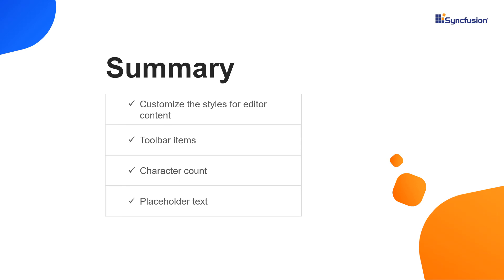That's it. You can download this working example from the GitHub link in the video description below. You can also check if you're eligible for our community license, which gives you a free license key to use our Blazor products. If you found this video useful, click the like button and subscribe to our channel to get notifications about new videos. Thanks for watching.